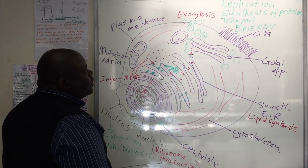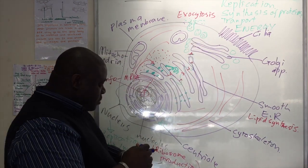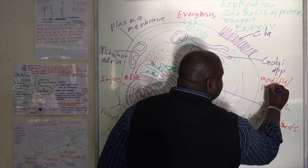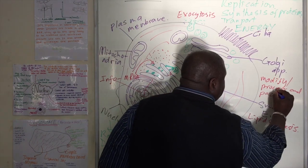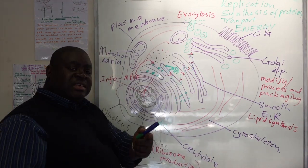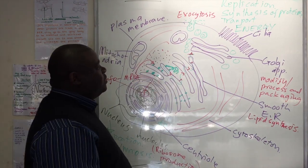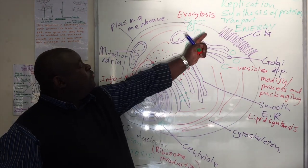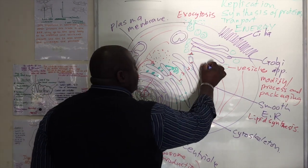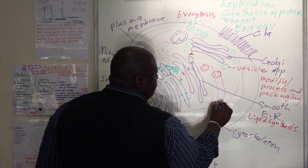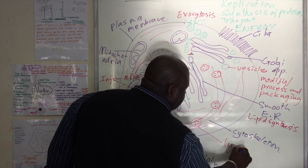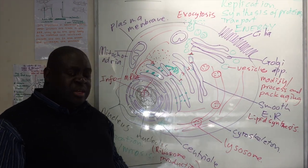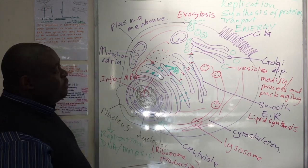Where were these vesicles made? The vesicles were synthesized or made in the Golgi apparatus. The main function of the Golgi apparatus would be to modify, process, and package cellular products in the form of vesicles. Some vesicles are used for export; a few, however, will remain in the cell. One of these would be the lysosome, which is used by the cell to digest worn-out organelles, and also when the cell is infected by a pathogen, the lysosome contains digestive enzymes that will break down the pathogen.